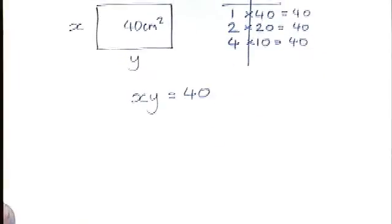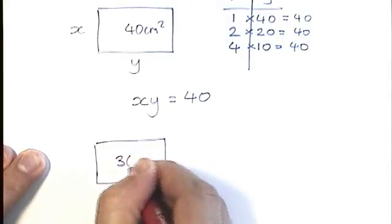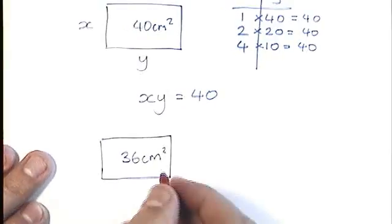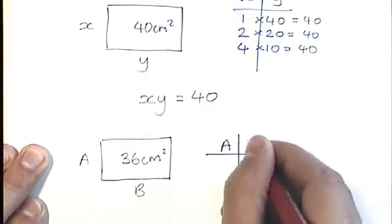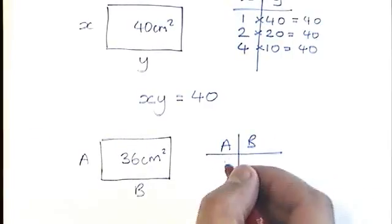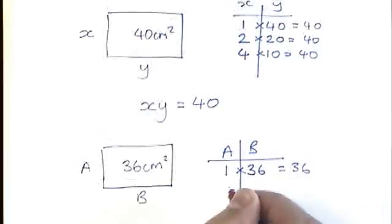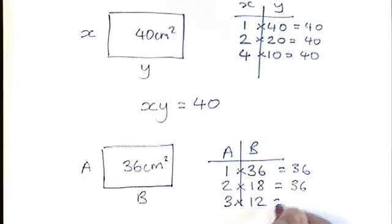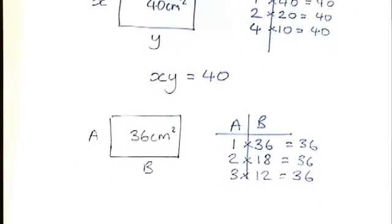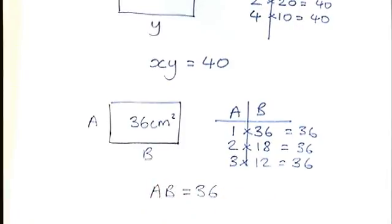Here's another example using a different rectangle. Let's say that the area has to be 36 centimeters squared. Let's use the letters A and B. What could A and B be as pairs? Well, if I had 1 times 36, that would work. If I had 2 times 18, that would work. 3 times 12, that would work. So these pairs of numbers, A and B, again, are in inverse proportion. When you multiply them together, they make a constant number.